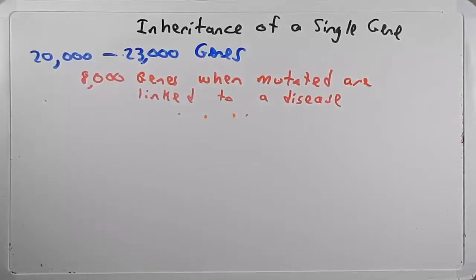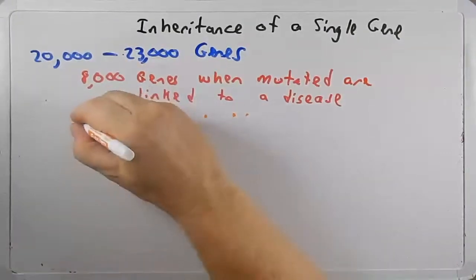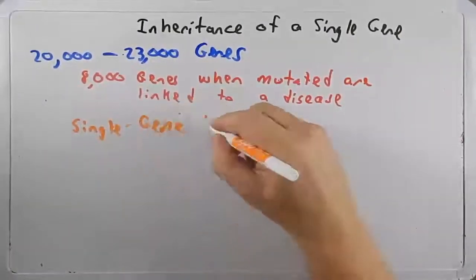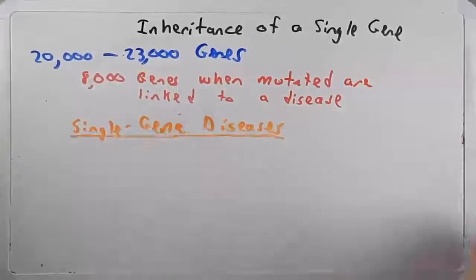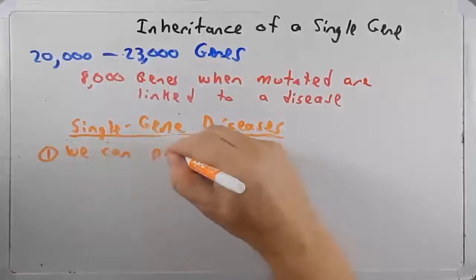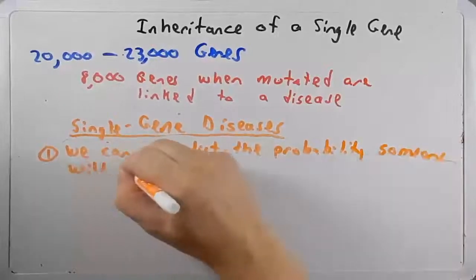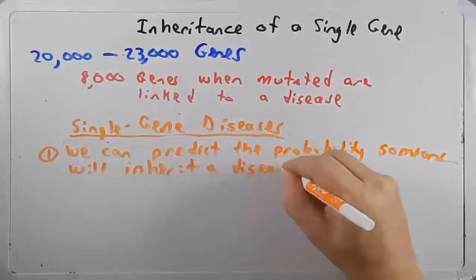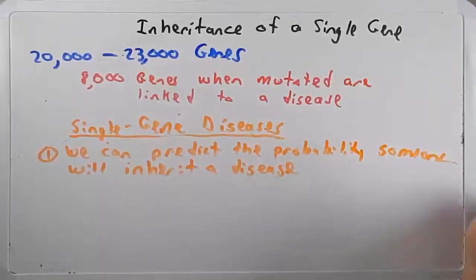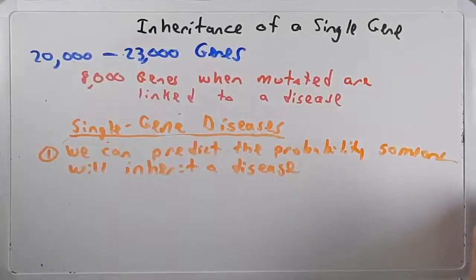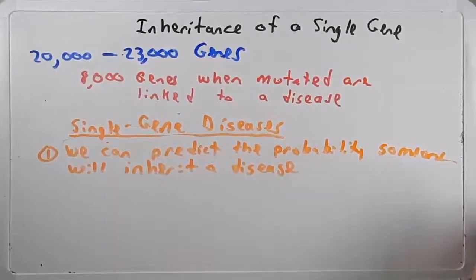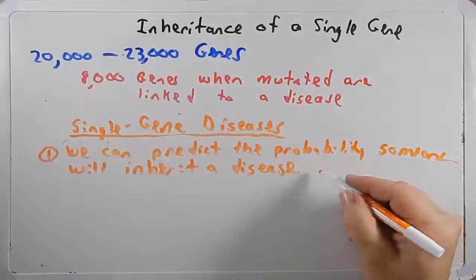Over the past many decades since Mendel started this field, at least the field that we now call genetics, we understand how single genes can lead to diseases. So let's just write single gene diseases. Over the past many decades, we can predict the probability someone will inherit a disease. For instance, if we know a parent has Huntington's disease, we know that any child born from them, there's a 50% chance that they will have the disease.